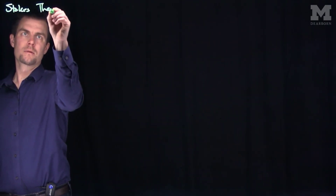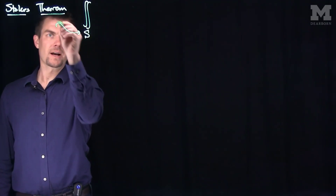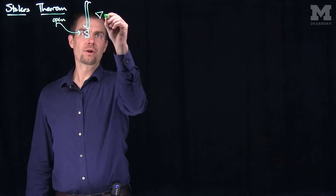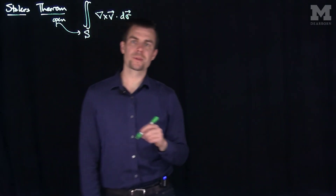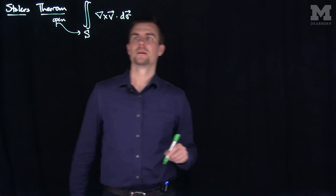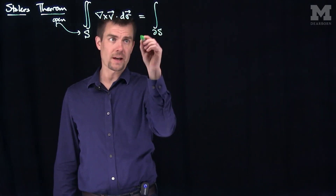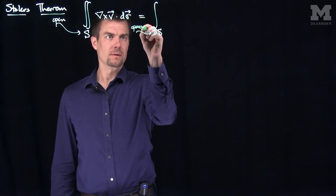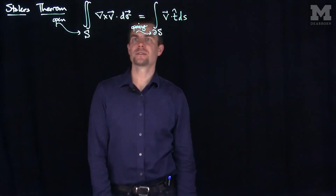Hello, students. In this video, we'll see an example of applying Stokes' Theorem. Stokes' Theorem states that the surface integral over an open surface S of the curl of a vector field, dot d-sigma vector — in other words, the flux of the curl of V — is equal to the flow integral over the boundary of that surface, the opening of S, of V dot t-hat dS. That's Stokes' Theorem.